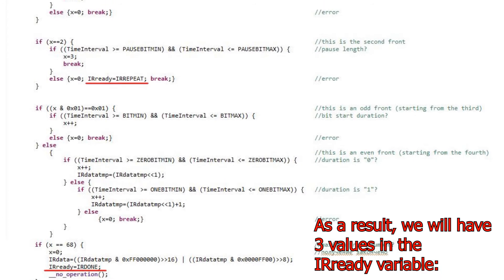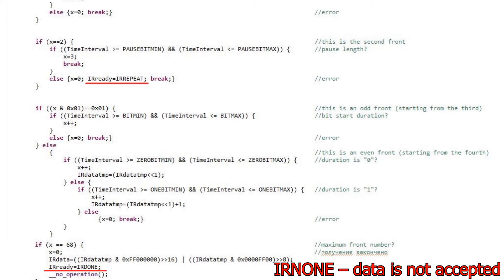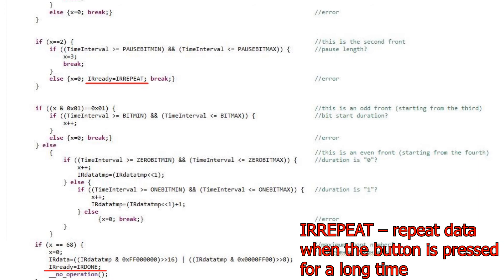As a result, we will have three values in the IR ready variable. IR none, data is not accepted. IR done, data is accepted. IR repeat, repeat data when the button is pressed for a long time.